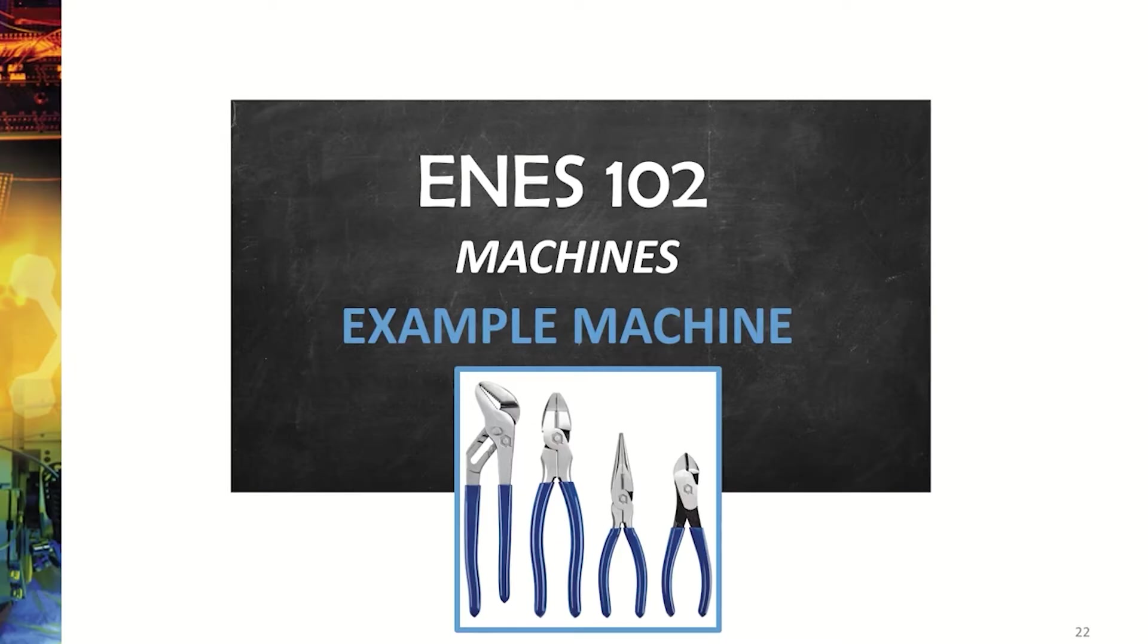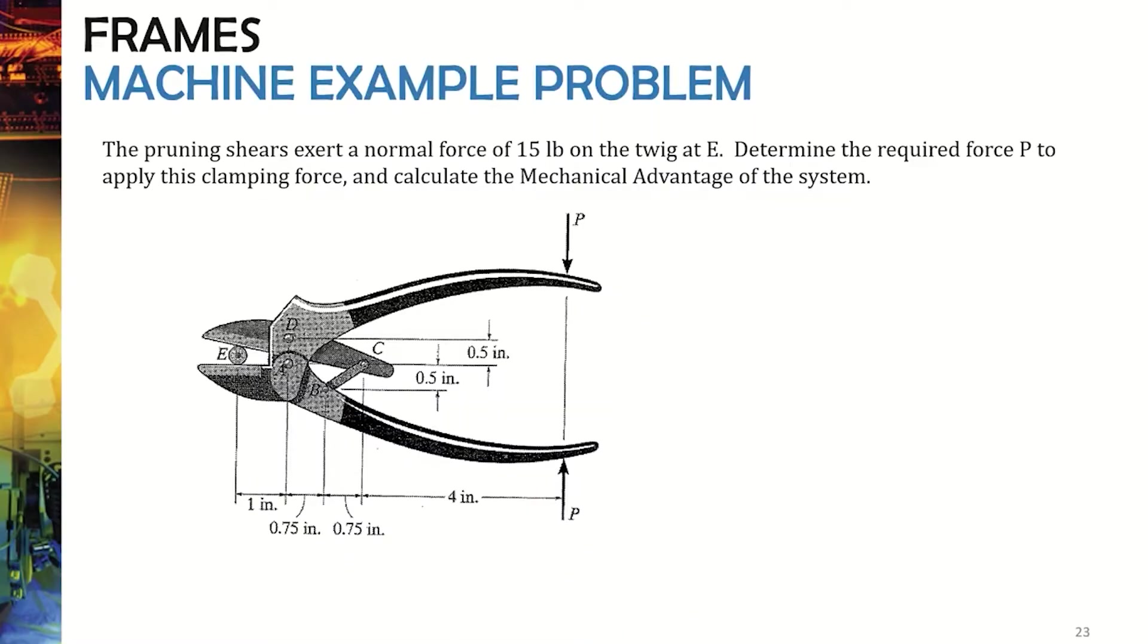Now what we'll do is we'll look at one example machine question because a lot of the machine questions are similar. You'll find additional example problems at the end of this presentation as well to help you understand these concepts more. The question we'll look at is this one right here, which is an example of pruning shears. We're told that they exert 15 pounds on the twig at E, and we're told to determine the force required, P, right here, in order to get that 15 pounds at this point here.